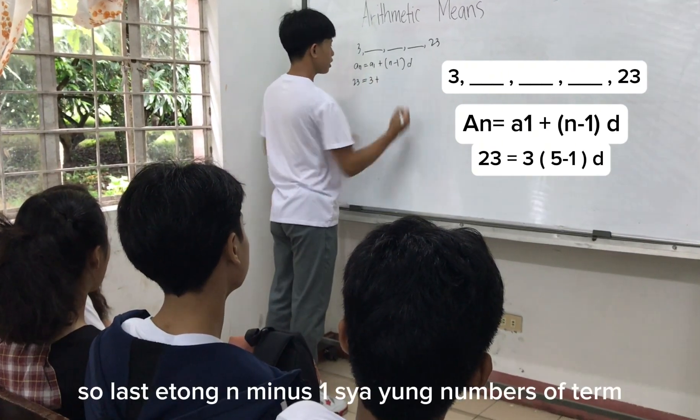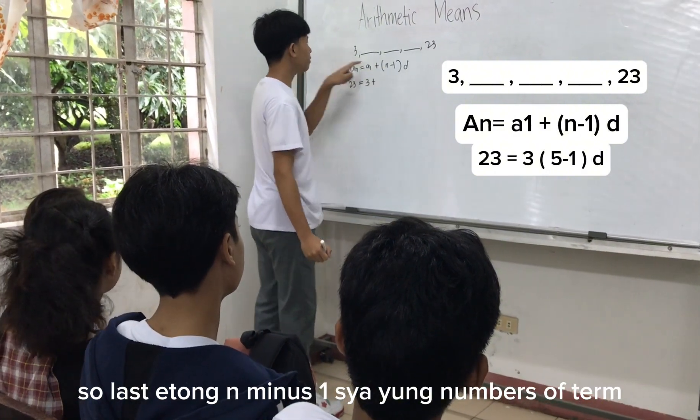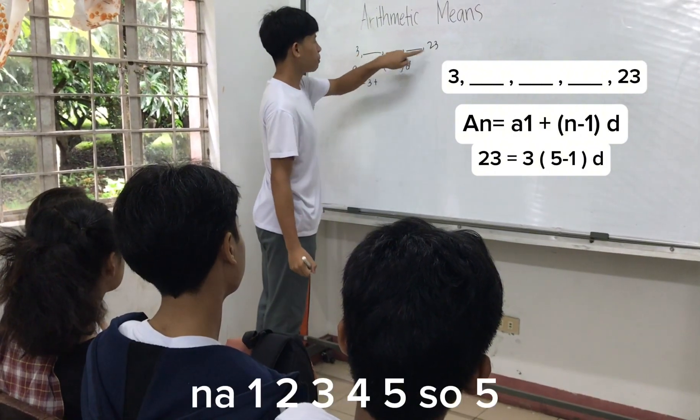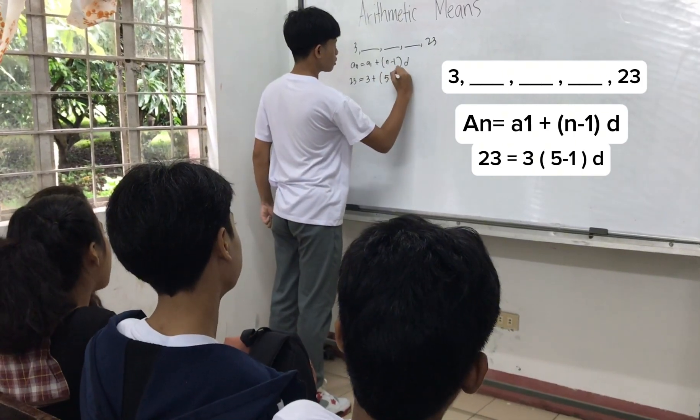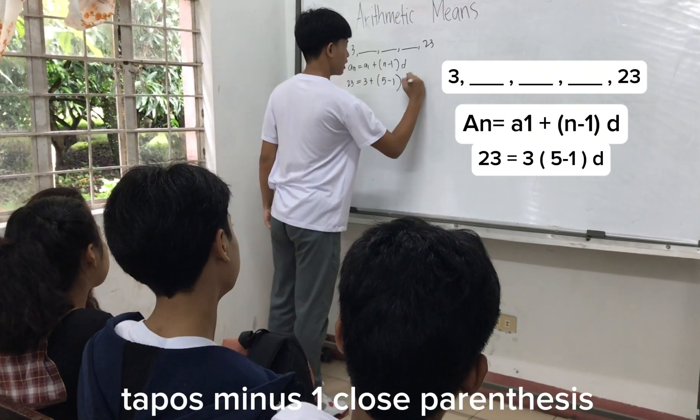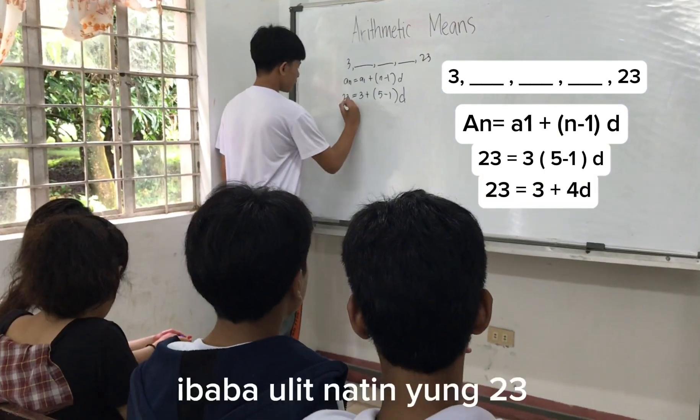Plus itong n minus 1 is the number of terms of 1, 2, 3, 4, 5, so 5. Plus minus 1, close parenthesis. So, ubog na man natin yung 23.